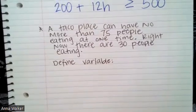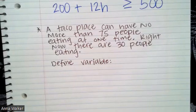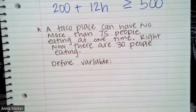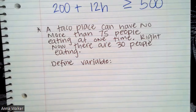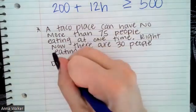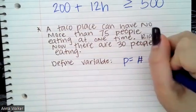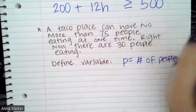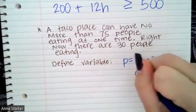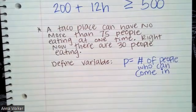Let's look at another example. This one's a little bit more straightforward. I'm going to read it, and then pause the video to write down the scenario. A taco place can have no more than 75 people eating at one time. Right now there are 30 people eating. Go ahead and pause. So let's write a scenario that shows how many more people could come into the restaurant. There's no variable defined, so let's define a variable. Let's use P because we're talking about people. So we'll say P is equal to the number of people who can come in.